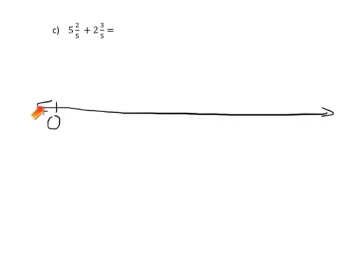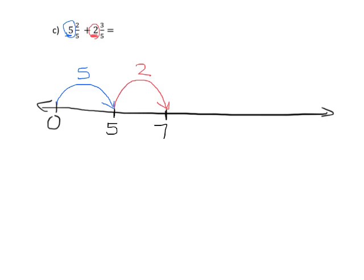I'm not going to make this proportional. What I'm going to do is show a jump of 5 — that's for this 5 right here — and that puts us at 5. Now I can jump 2 because of this 2, and that's going to put us at 7. So I'm kind of using the commutative property here.